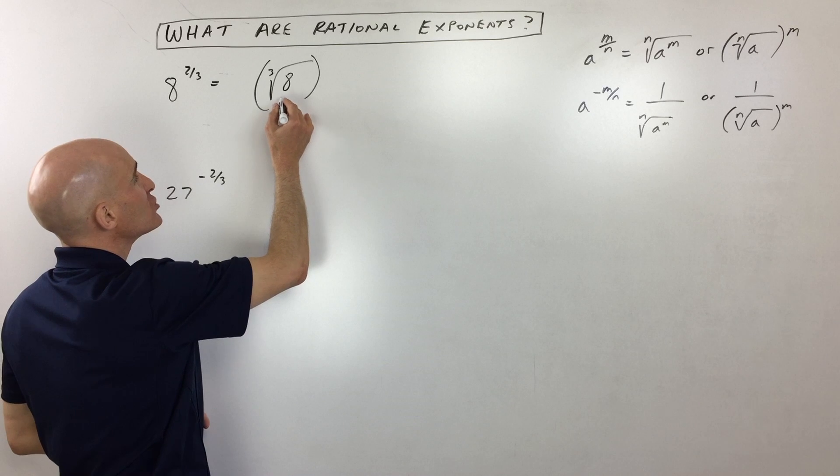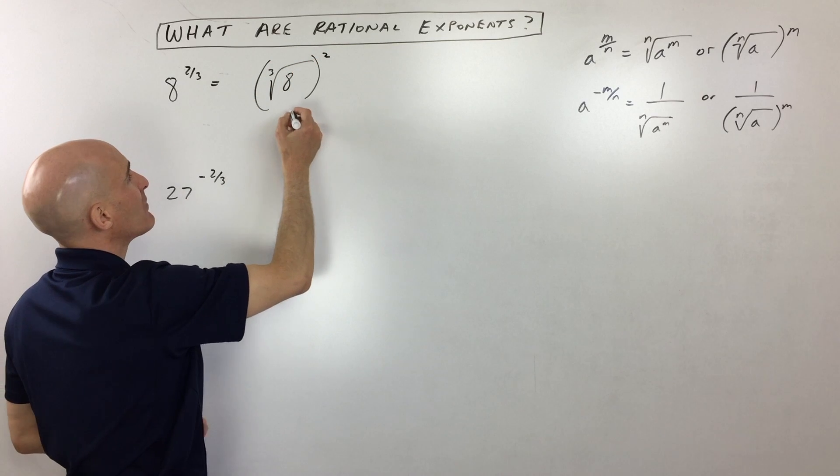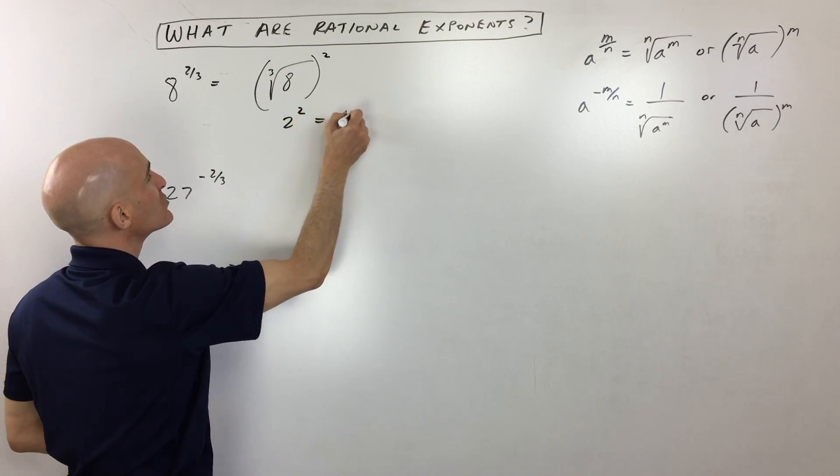That's going to be 2, because 2 times 2 times 2, 2 cubed is 8. And then you want to raise it to the second power. So this is 2 squared, which equals 4.